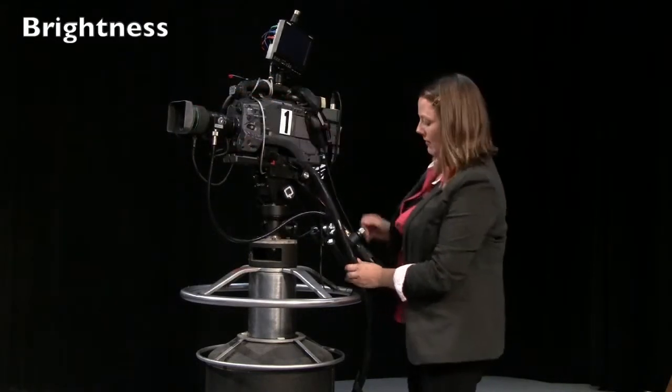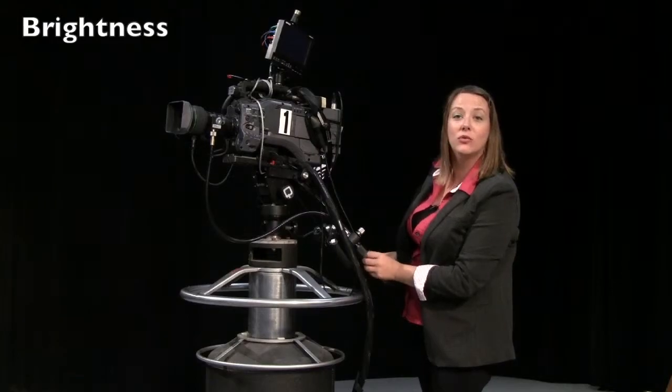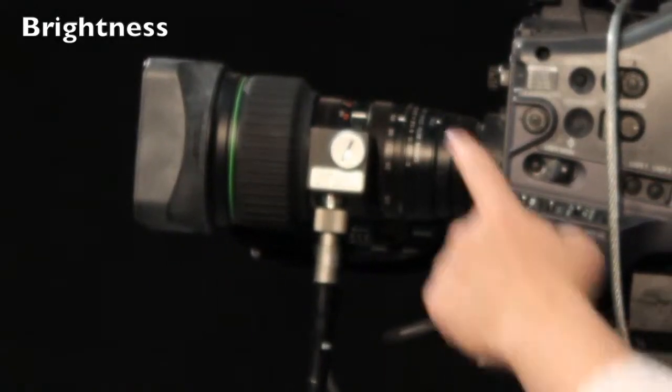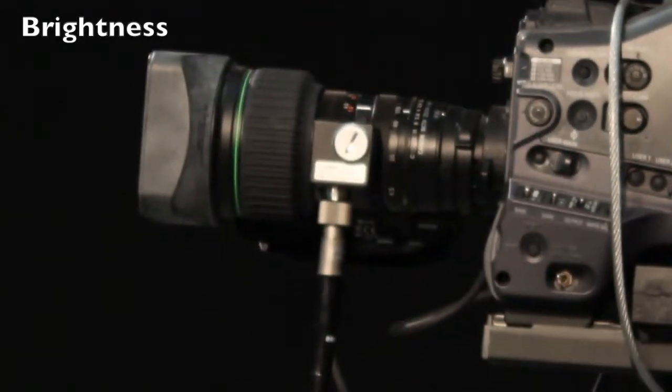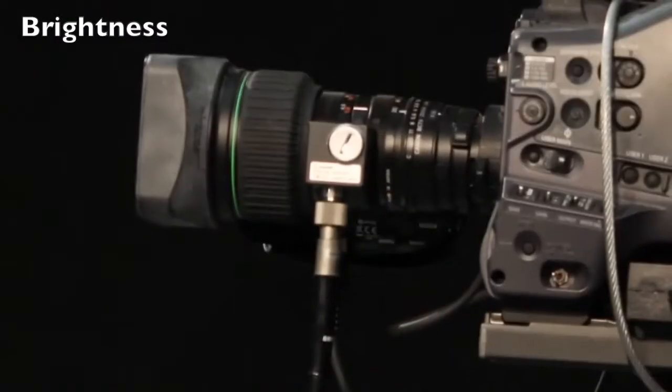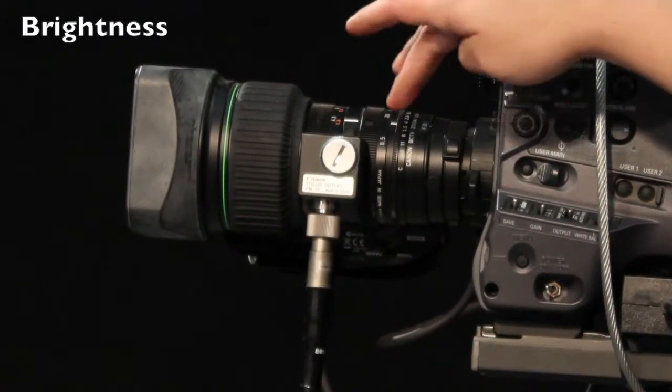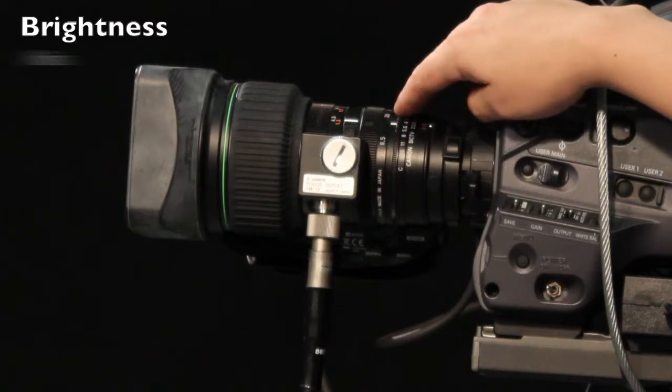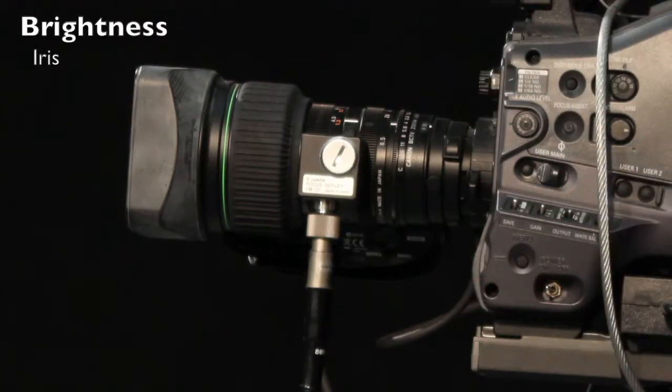The first ring is our focus ring, which we control with the focus servo. The middle ring is the zoom ring, and you'll see that's controlled with your zoom servo. Lastly, this third ring controls our iris, how much light is being let into the lens.